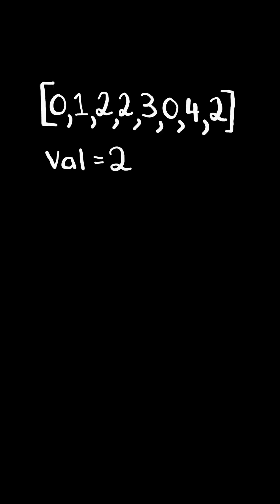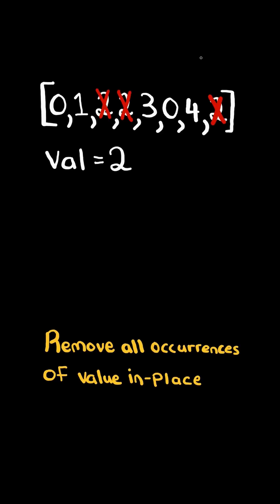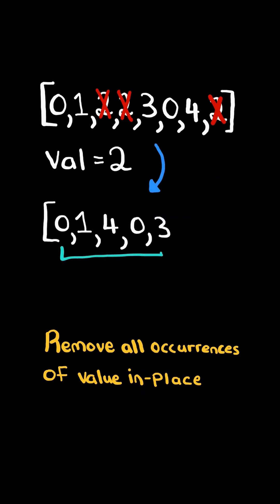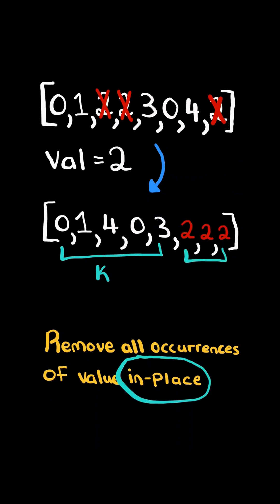Remove element. Given a list of integers and a value, remove all occurrences of value in place. The k elements that are not equal to value must appear first and can appear in arbitrary order, and the remaining elements can be arbitrary. At the end, return the integer k.